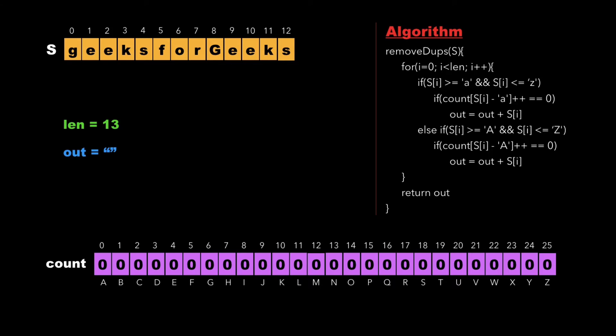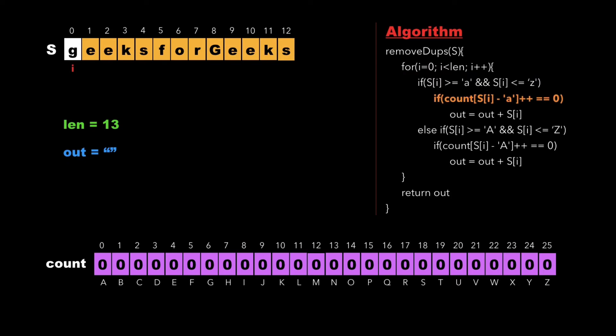Initially, we traverse the string from i equal to 0 to length. At each traversal we check whether the character at that location is lowercase or uppercase. Since 'g' is lowercase, we are in the if condition, where we check whether the value of that character in the count array is equal to 0. If so, we update the count value and concatenate that character to 'out'. The value of 'out' is now 'g', and we increment i.